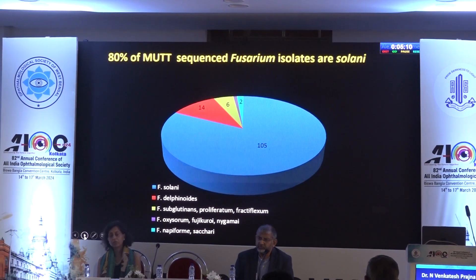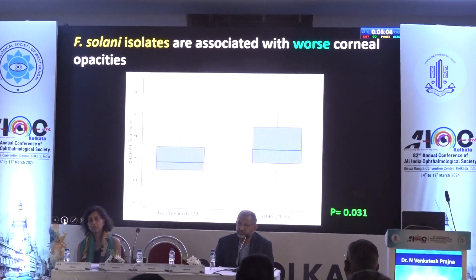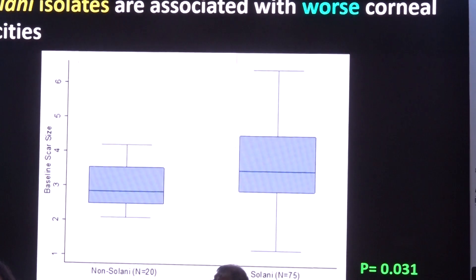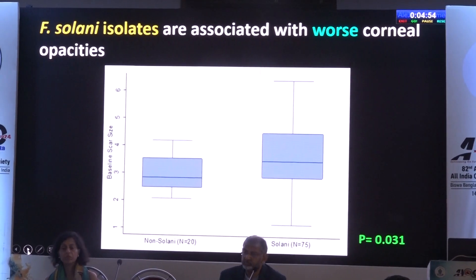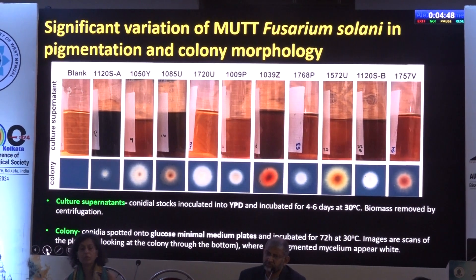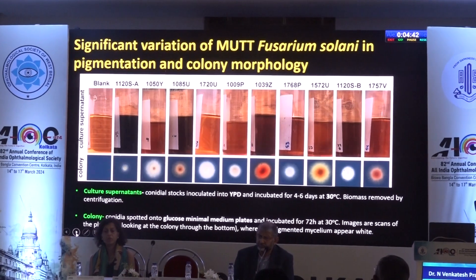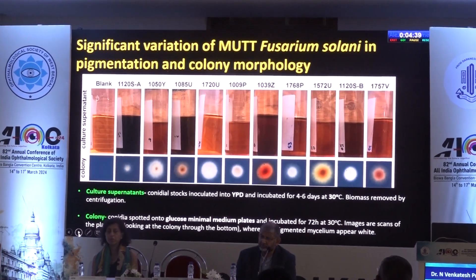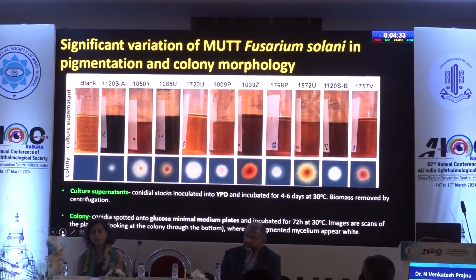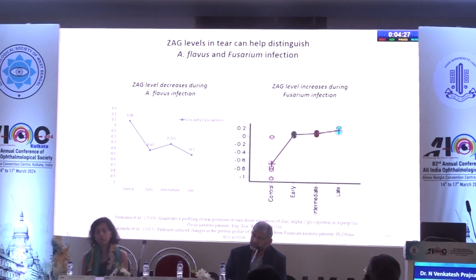What was more interesting is this: eighty percent of the sequenced Fusarium isolates were Fusarium solani. But we found that when caused by Fusarium solani as opposed to other Fusarium species, Fusarium solani causes more corneal opacity — it excites the human immune system much more. The spectrum of Fusarium solani shows different pigmentations, and once it is more pigmented, it is considered more virulent. So within Fusarium itself there are multitudes of virulence variations.